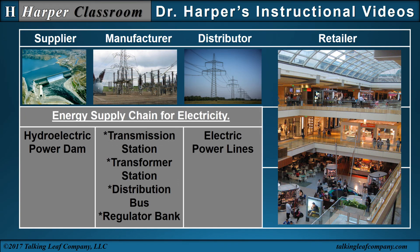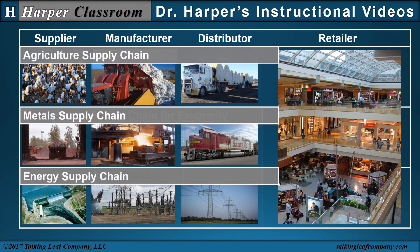Next is the energy supply chain for electricity. Start with the hydroelectric power dam as one supplier. The manufacturer could consist of the transmission station, the transformer station, distribution bus, and a regulator bank. The distributor could be the electric power lines, eventually to the retailer and the customer. Even though these are just three examples, there are many different supply chains.